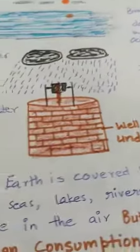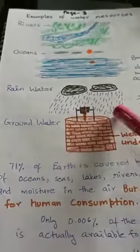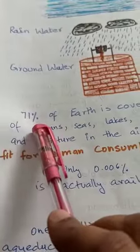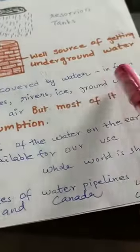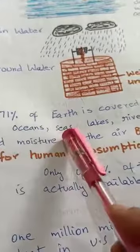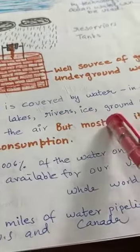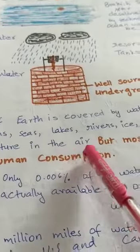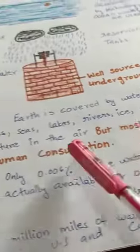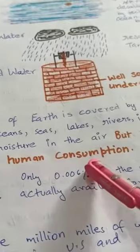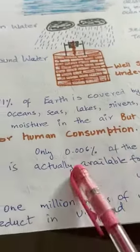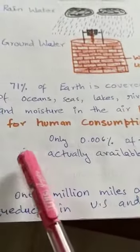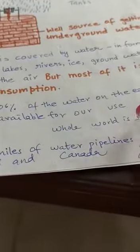These are some examples of water resources. Now, 71% of Earth is covered by water in the form of oceans, seas, lakes, rivers, ice, groundwater, and moisture in the air. But most of it is not fit for human consumption. As I have shown you in the diagram, only 0.006% of the water on Earth — or we can take 1% — is actually available for our use.